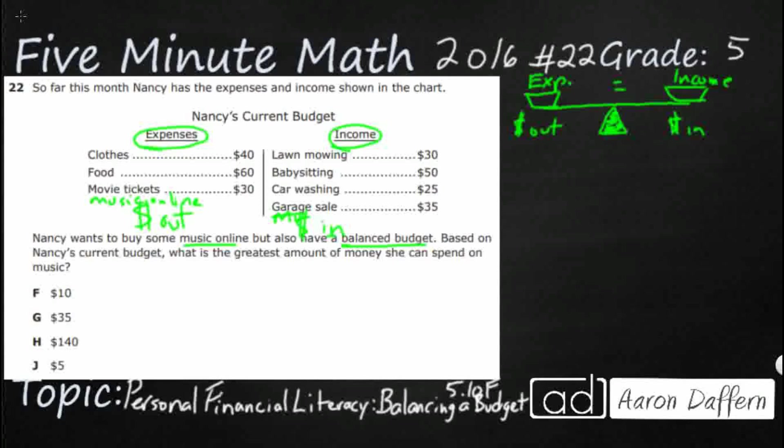So let's see what we have here: clothing, food, movie tickets. She's got expenses of $100 and $30, that's $130. All right, so she's got total expenses of $130.